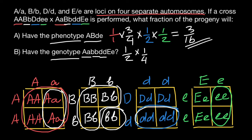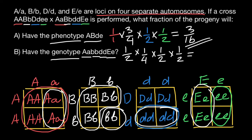And heterozygous for gene E — as you can see, that is also 50 percent, so times one-half. Our answer is: 2 × 4 = 8, × 2 = 16, × 2 = 32. So the probability of this specific genotype in the progeny is one over thirty-two.